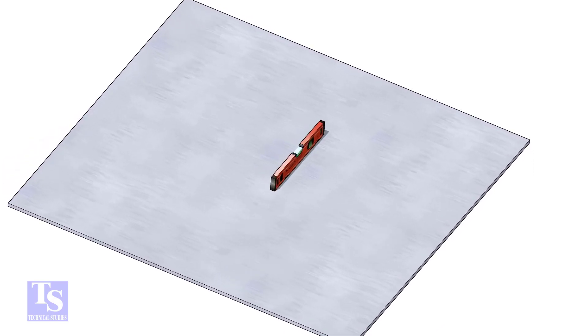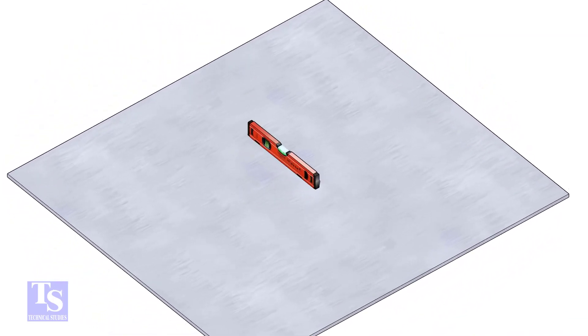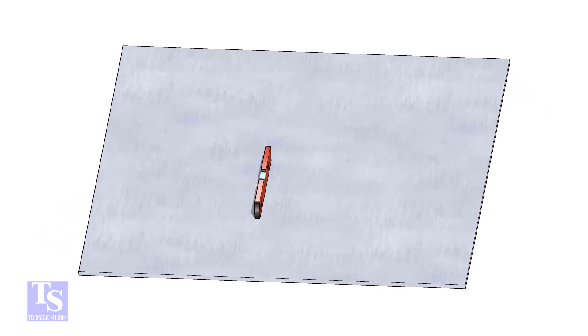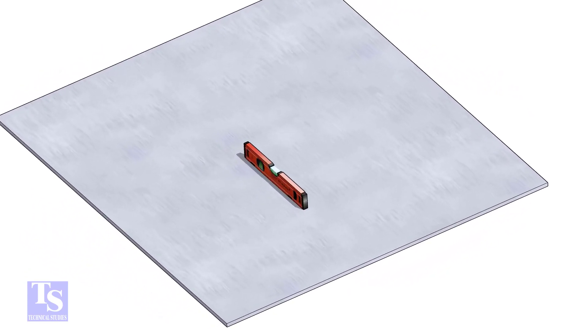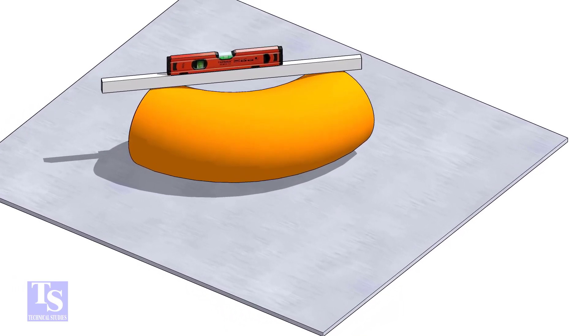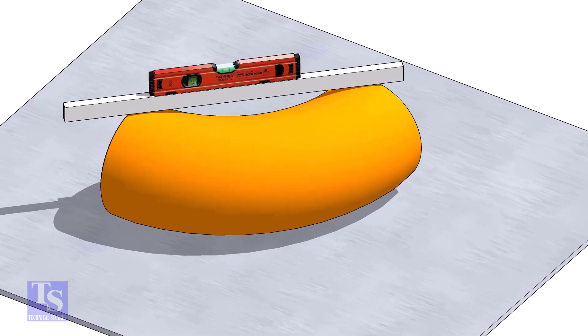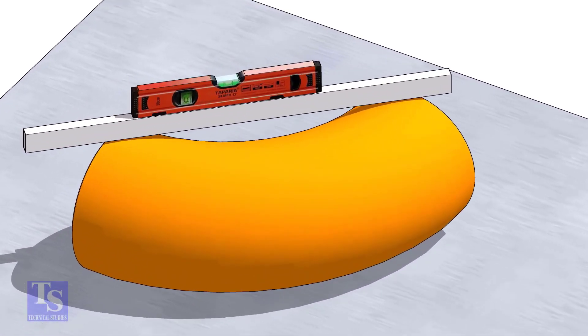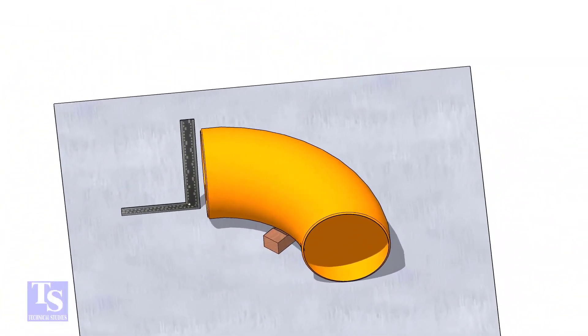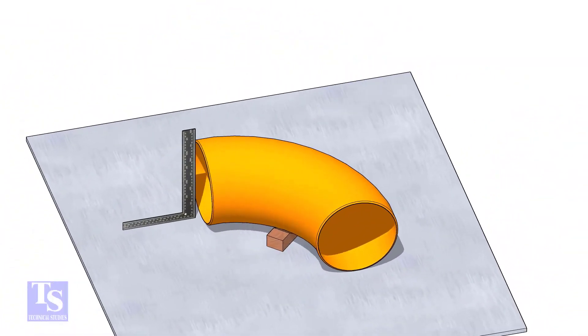Let us mark the center of the elbow. Choose a leveled plate and put the elbow on it. Check the level of the elbow. Check the squareness of the face of the elbow with the plate. If necessary, put some packing below as shown.